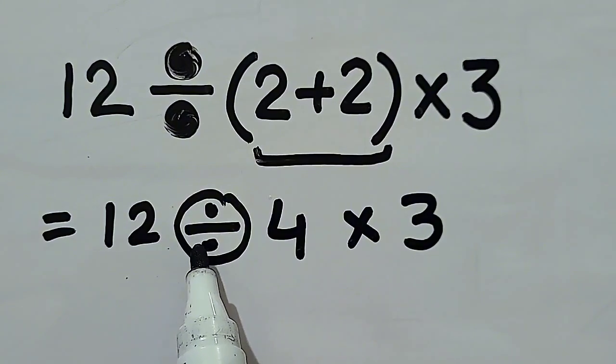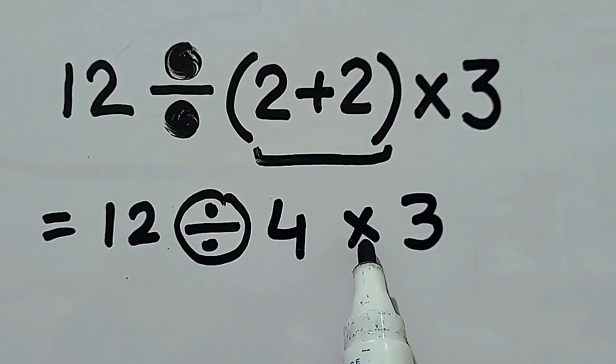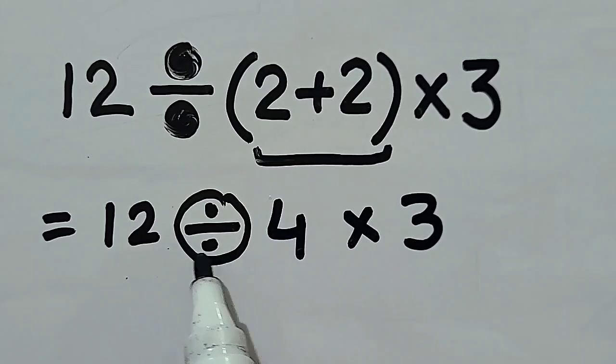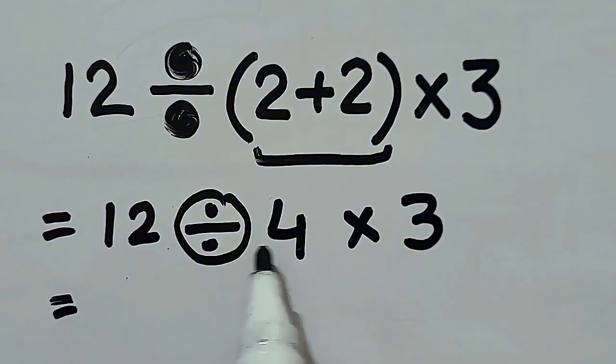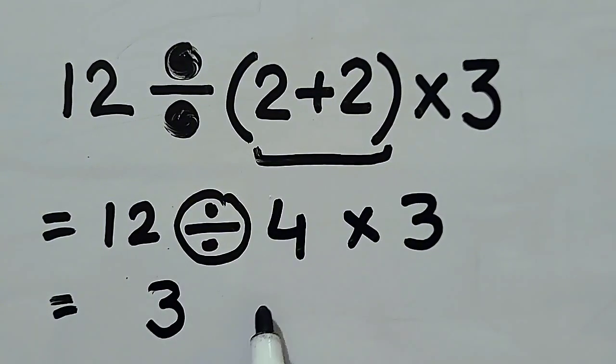Now, division is at left and multiplication is at right. So, according to PEMDAS, we have to solve division first because it is at left place. So, 12 divided by 4 will be equal to 3 times 3.